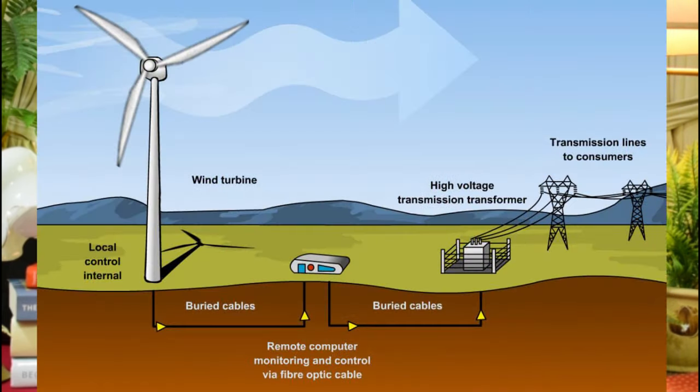Now let us look at the resources one by one. First, we will see wind power. Wind is abundantly present in nature. Coastal lines, mountain regions, high altitude areas are preferred locations. Modern wind mills are arranged there. As the wind moves, the wind turbines move, and in this way energy production is achieved.